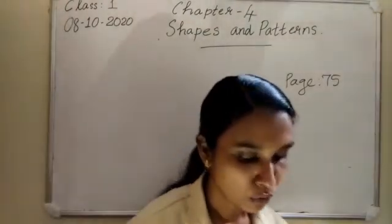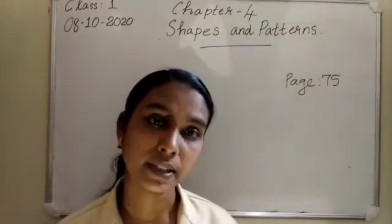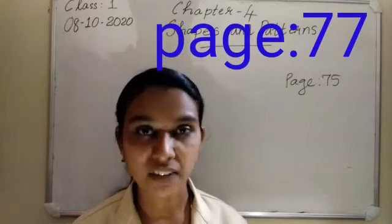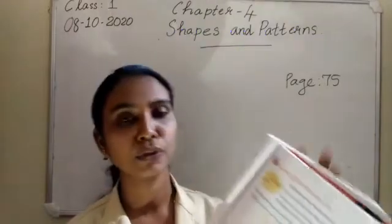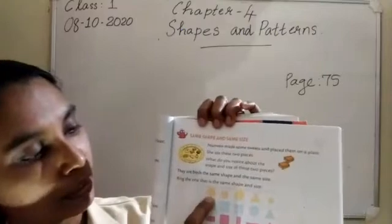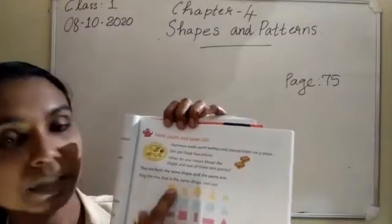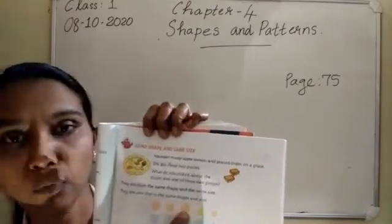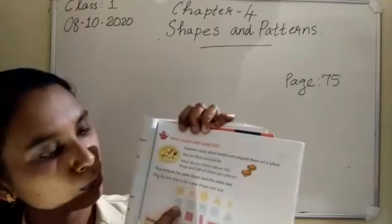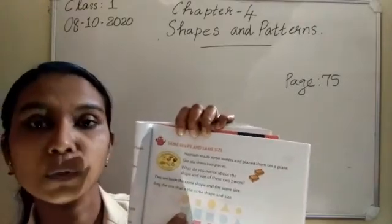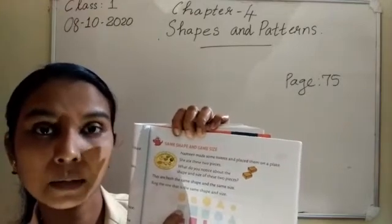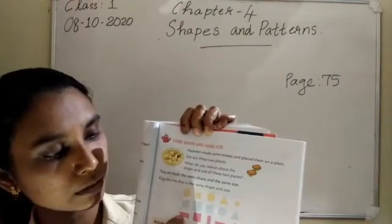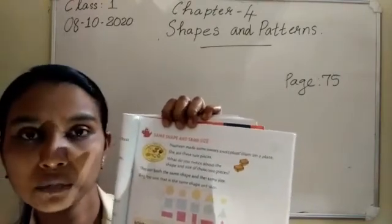Next we move on to same shape and same size, page number 77. Here there is one more exercise. There is a circle - find which looks like the same shape and same size, only one. Next one, there is a square - which square looks like the same shape and same size? Then the rectangle box - which one looks like the same size and shape?